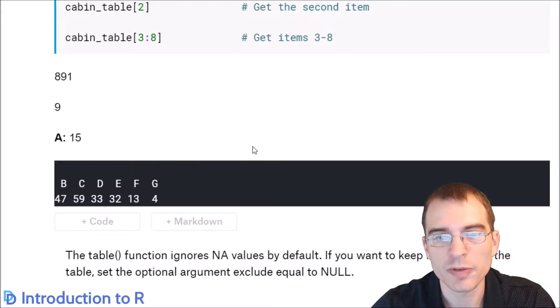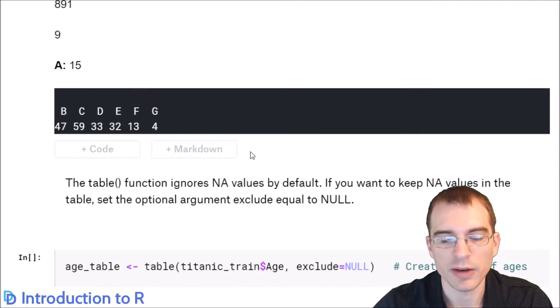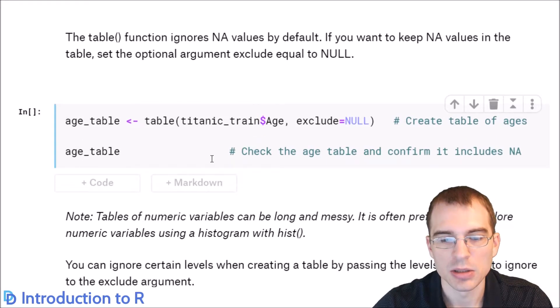Now, the table function ignores NA values present in the data by default. So if you actually don't want that behavior and you want to keep NA values in your table, you have to add an extra argument to that. To keep NA values, you need to add this extra argument exclude equals null. And that will allow those NA values to be included in the table of counts.